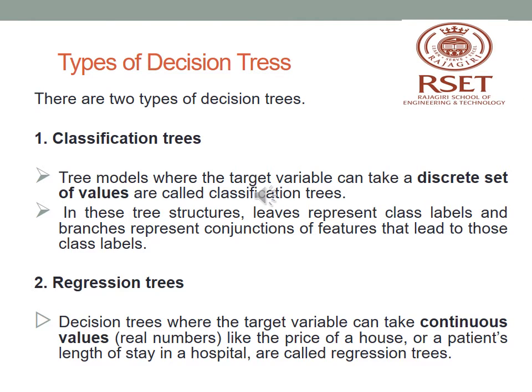There are two types of decision tree: classification tree and regression tree. In a classification tree, the target variable takes a discrete set of values — for example, whether a person is fit or unfit, or whether to play tennis (yes or no). In a regression tree, the target variable takes a continuous real-number value, such as the price of a house, the price of gold after five years, or a patient's length of stay in a hospital.